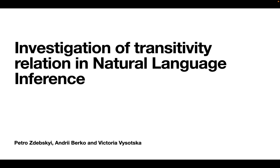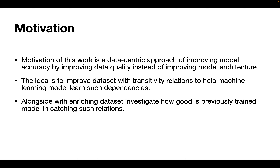This work investigates the transitivity relation in natural language inference. The motivation is a data-centric approach to improving model accuracy by improving data quality rather than model architecture. The idea is to improve the dataset with transitivity relation samples to help machine learning learn such dependencies, and alongside enriching the dataset, also investigate how well a previously trained model captures such relations.